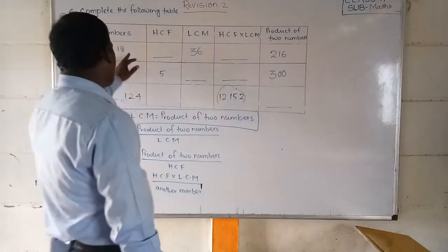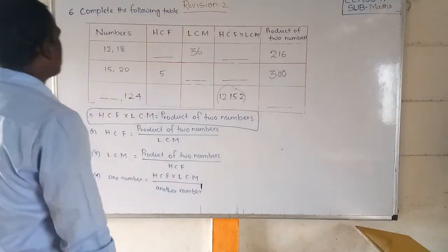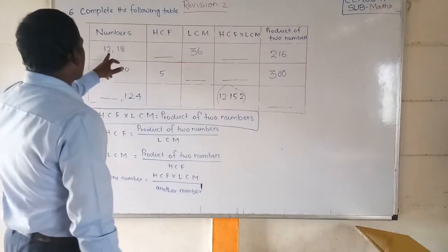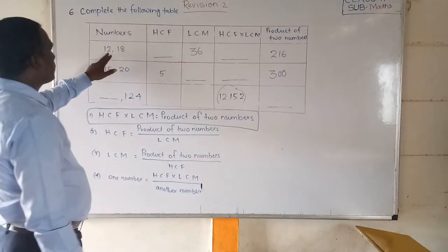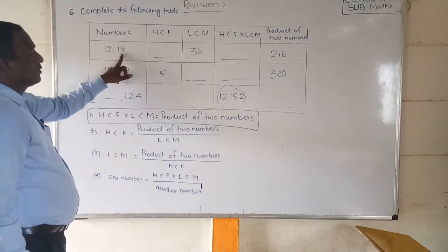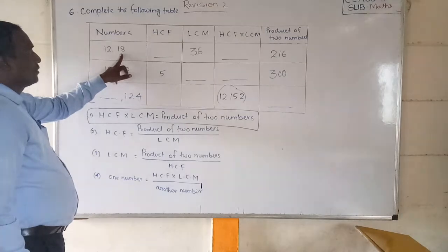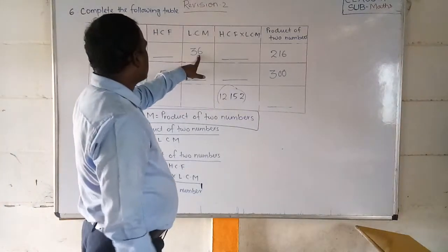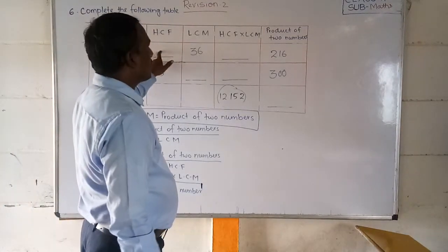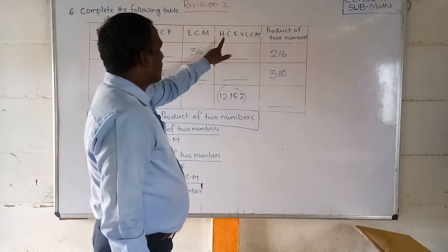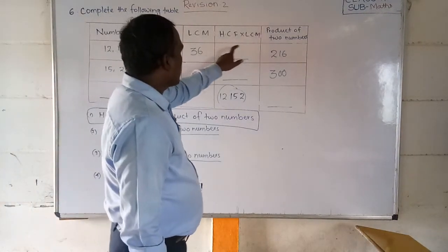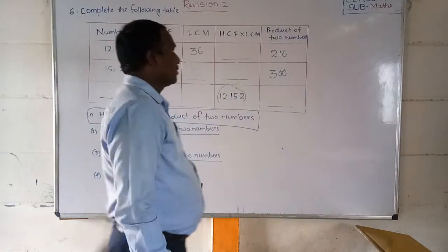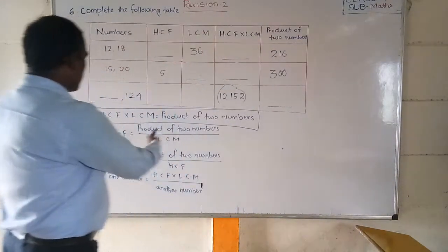Now let us start. First problem: given two numbers 12 and 18, and LCM is given as 36. The HCF is not given, and the product of HCF and LCM is not given directly. The product of the two numbers is what we are given.